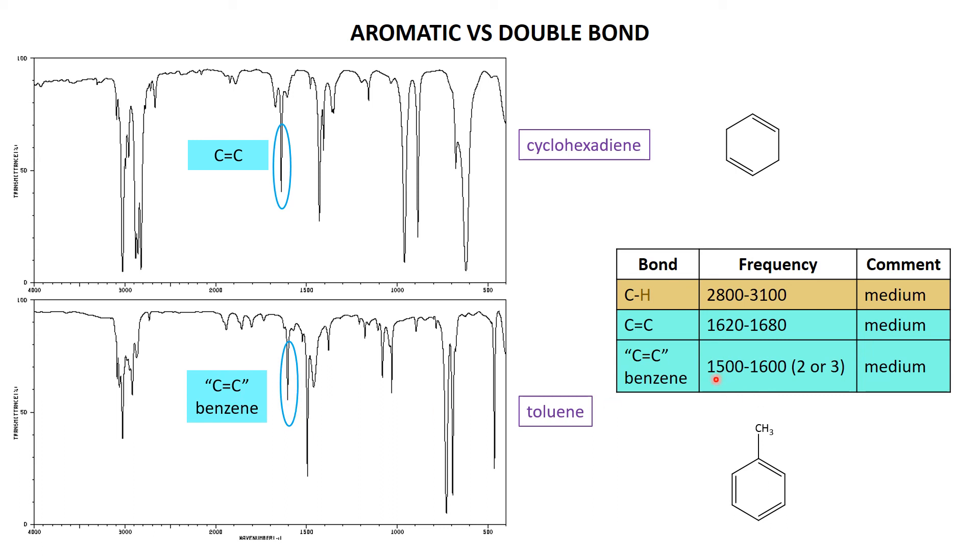And we expect that to be at a slightly less frequency than the straight double bonds that we see in the cyclohexadiene. And indeed, if I drop a line down from the cyclohexadiene, you can see that it is slightly higher frequency than the one in the aromatic species.